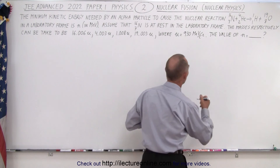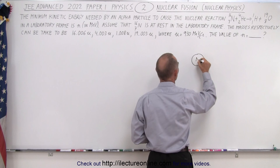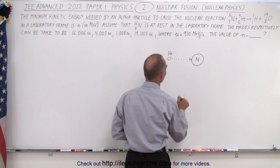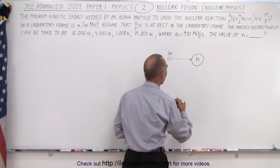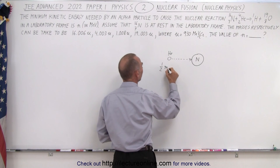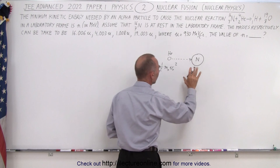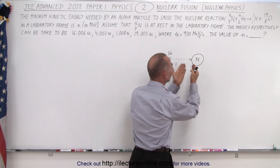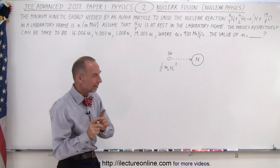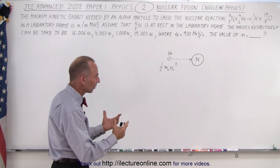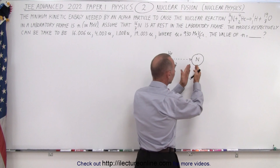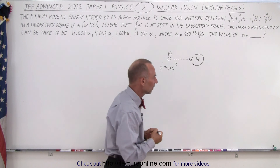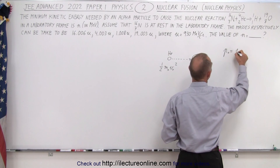Drawing a quick pictorial: we have nitrogen at rest and a helium particle moving at very high speed towards the nitrogen. It comes in with kinetic energy one-half M-initial V-initial squared. Normally we assume all that kinetic energy is used to cause the nuclear reaction, but that's not necessarily the case — part of it will be absorbed by the nitrogen as it begins to move. We must account for conservation of momentum.